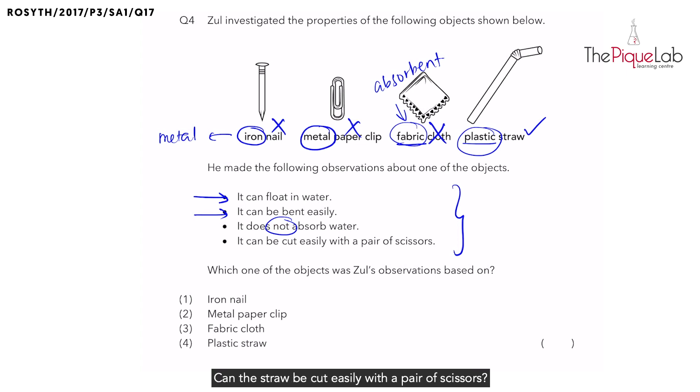Can the straw be cut easily with a pair of scissors? Yes, it can. So which one of the objects was Zhu's observation based on? The answer is plastic straw.